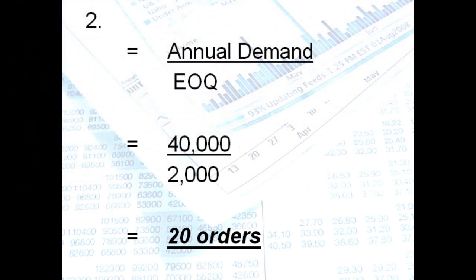Question number two, how many times the company should place orders within a year? So, we compute that using our formula annual demand divided by EOQ.